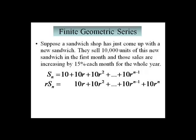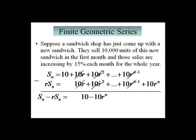Here's what's really nice about that. I'm going to subtract my two equations, because all the middle terms are going to cancel out. So when all's said and done, on the left-hand side I get S sub n minus r times S sub n. On the right-hand side, all I get left is 10 minus 10 times r to the n. Everything else canceled.